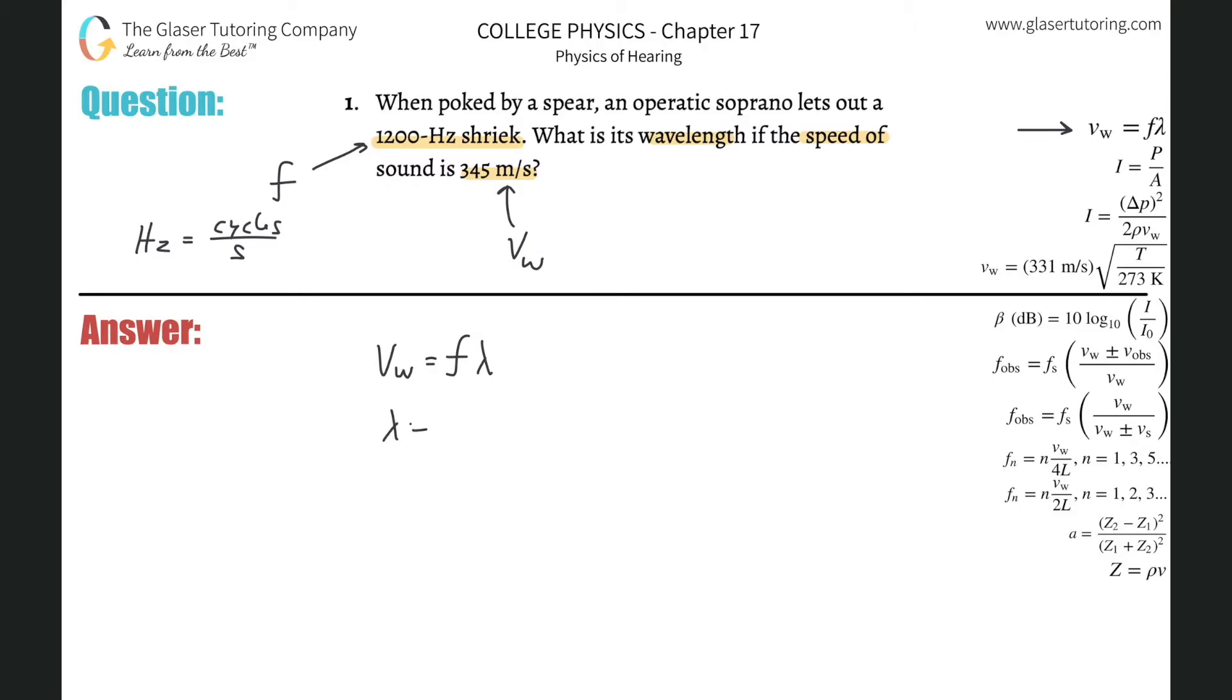To find the wavelength, simply divide out the frequency from both sides, so you'll have the velocity of the wave divided by the frequency, and now all you have to simply do is plug in.